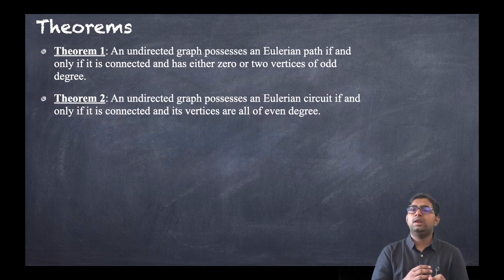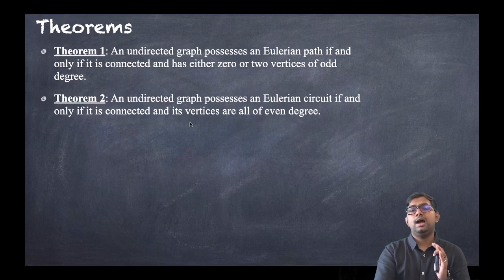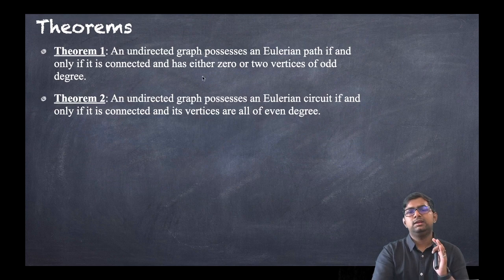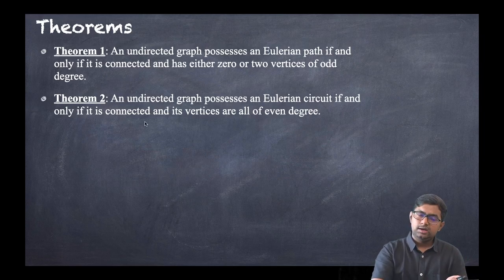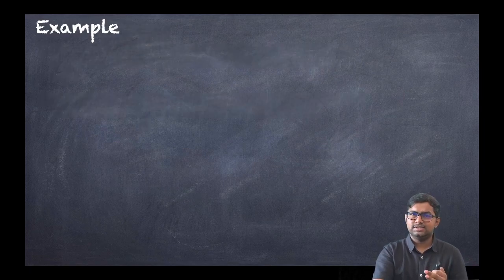The second theorem states: an undirected graph possesses an Eulerian circuit if and only if it is connected and all its vertices are of even degree. So for an Eulerian path: connected with zero or two vertices of odd degree; for an Eulerian circuit: connected with all vertices of even degree.